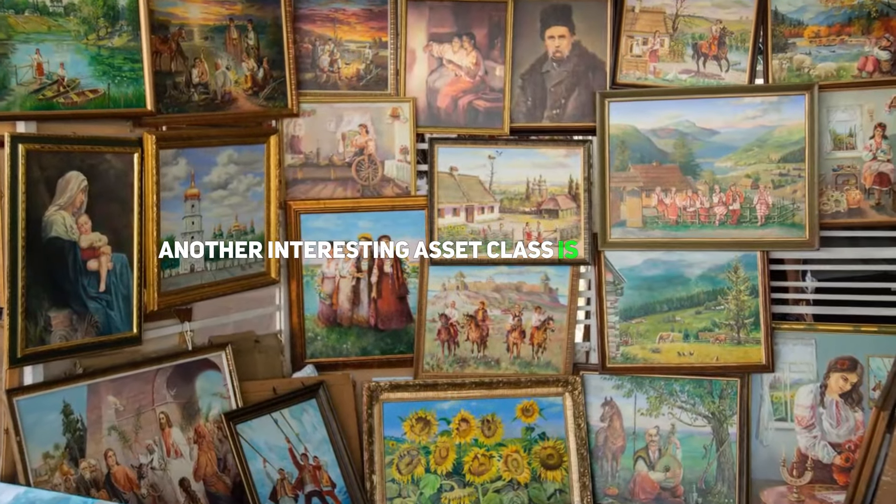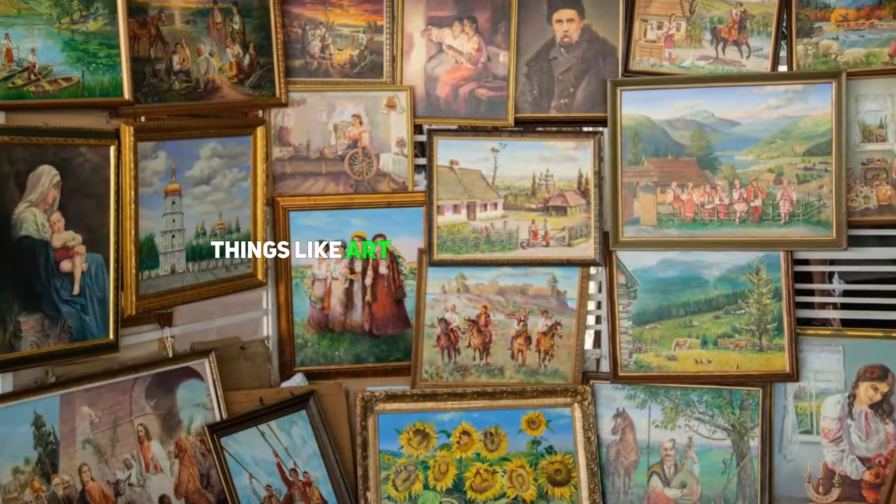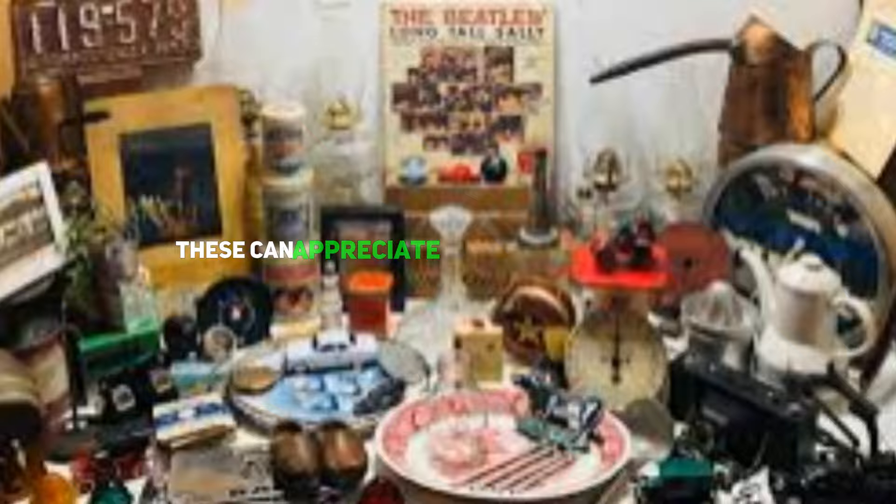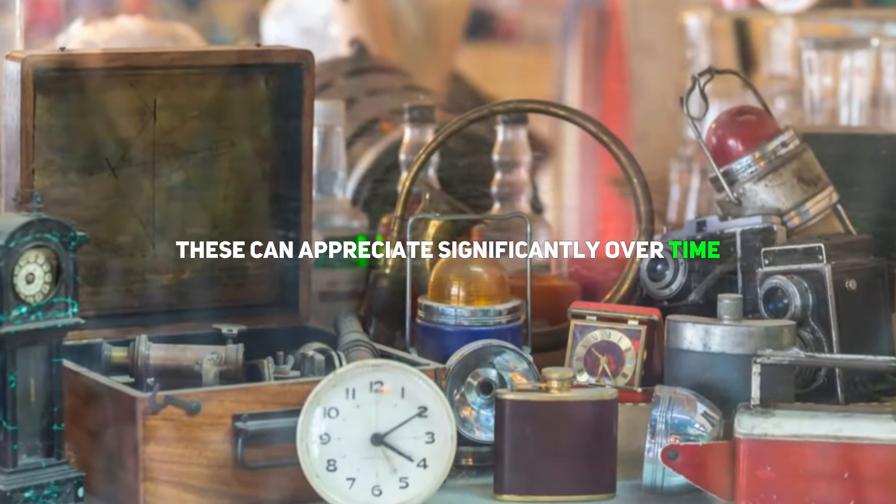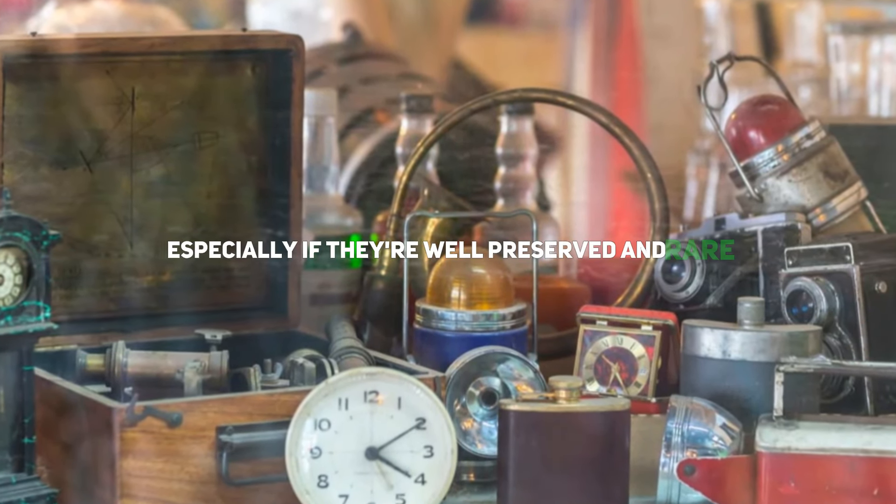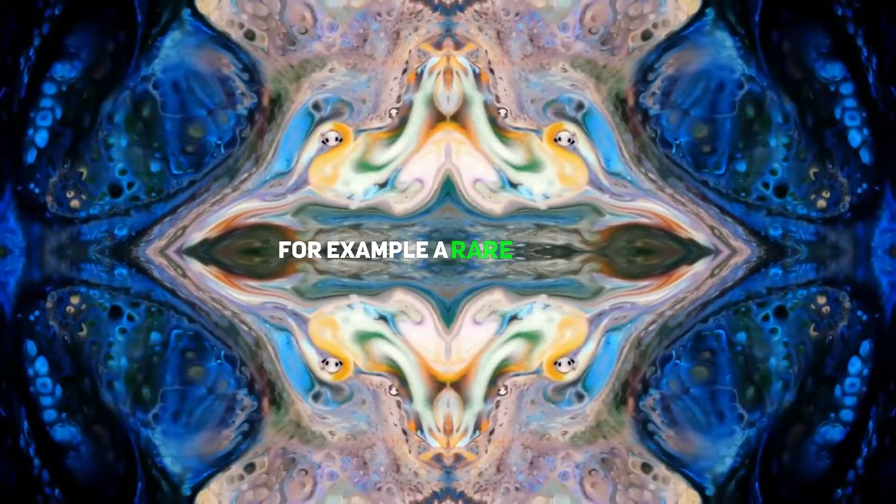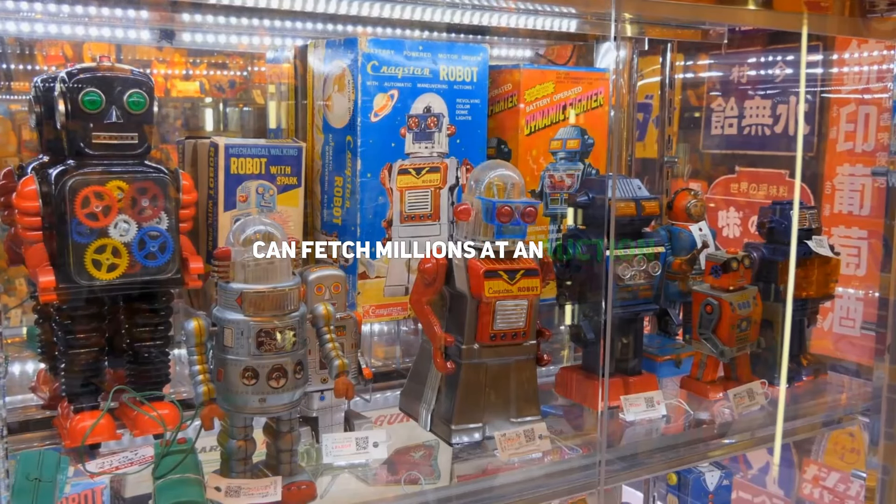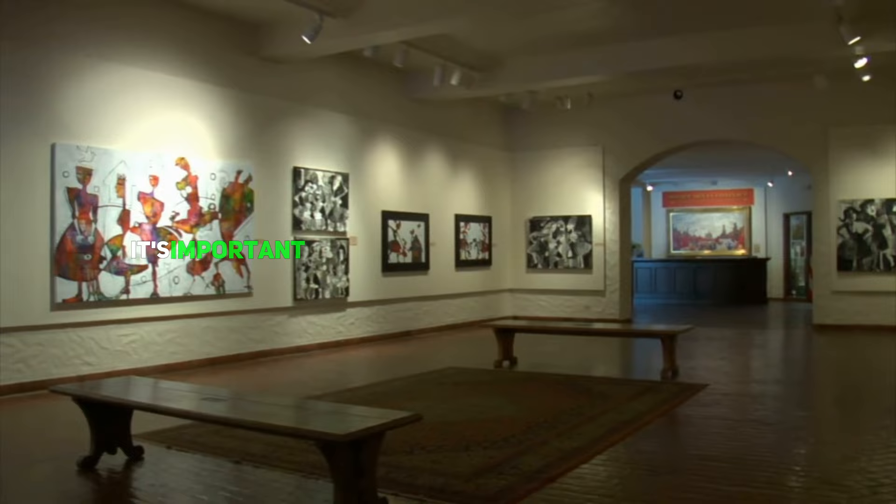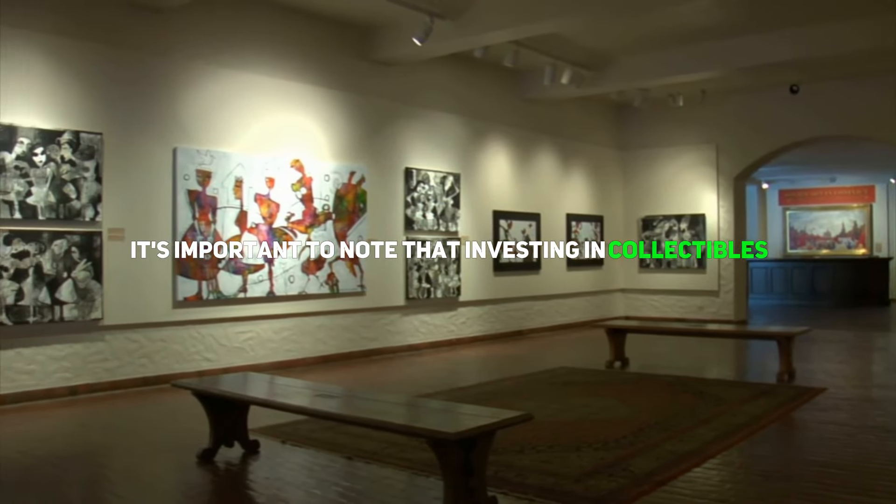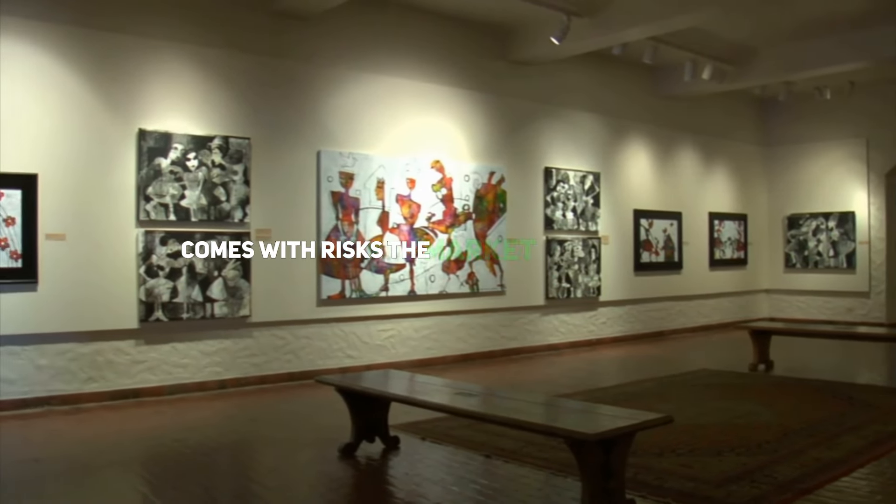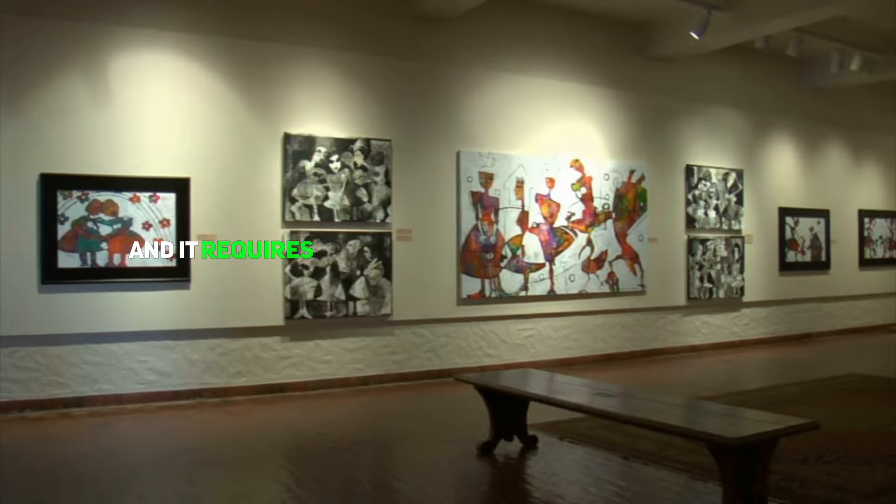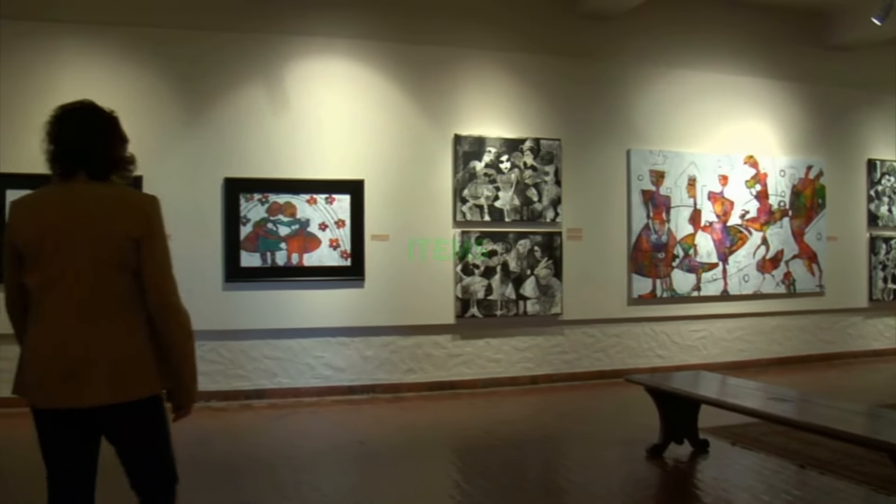Collectibles. Another interesting asset class is collectibles, things like art, antiques, and rare items. These can appreciate significantly over time, especially if they're well-preserved and rare. For example, a rare painting or an antique piece of furniture can fetch millions at an auction. However, it's important to note that investing in collectibles comes with risks. The market can be volatile, and it requires expertise to identify truly valuable items.